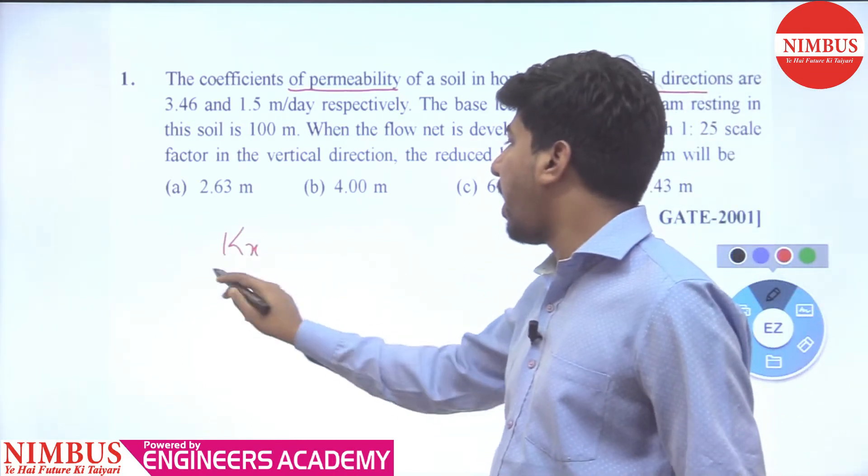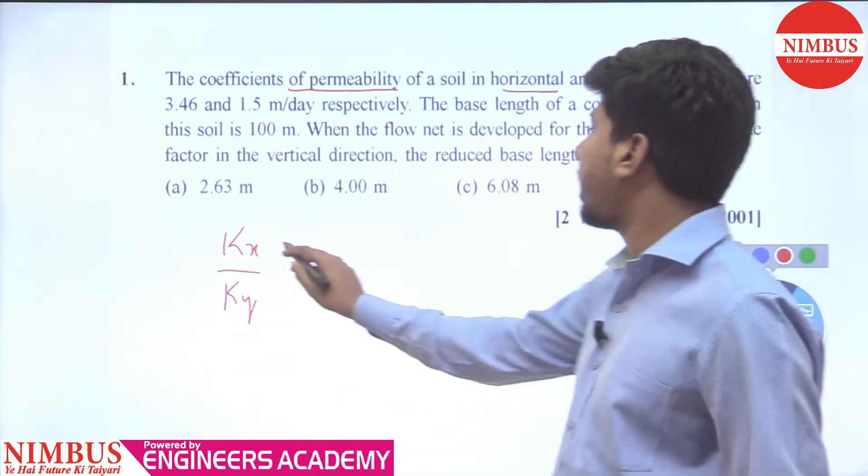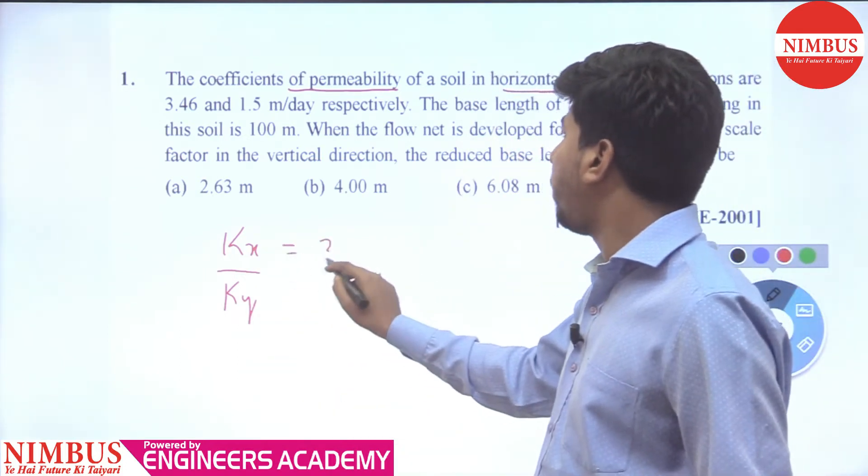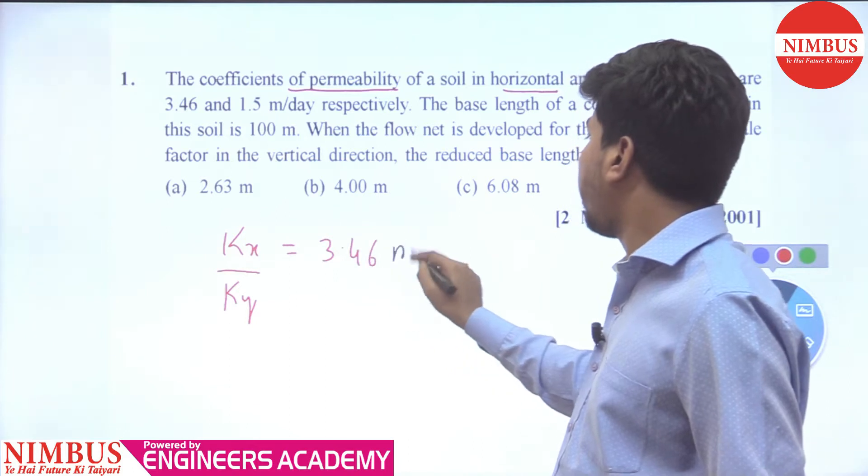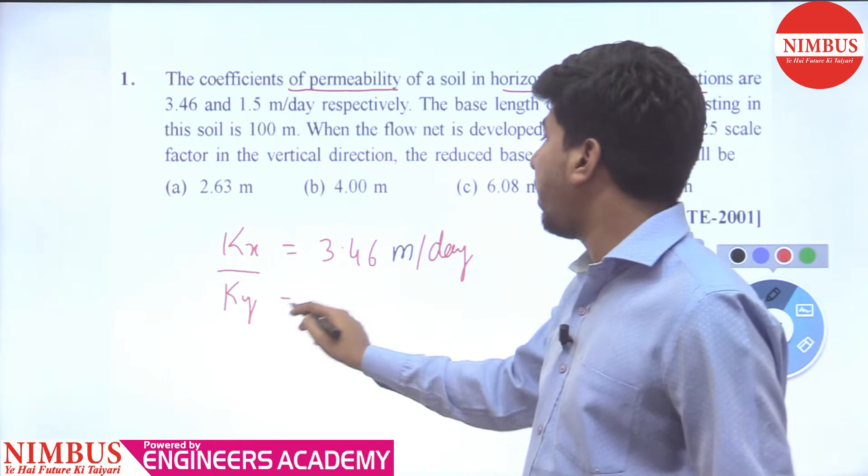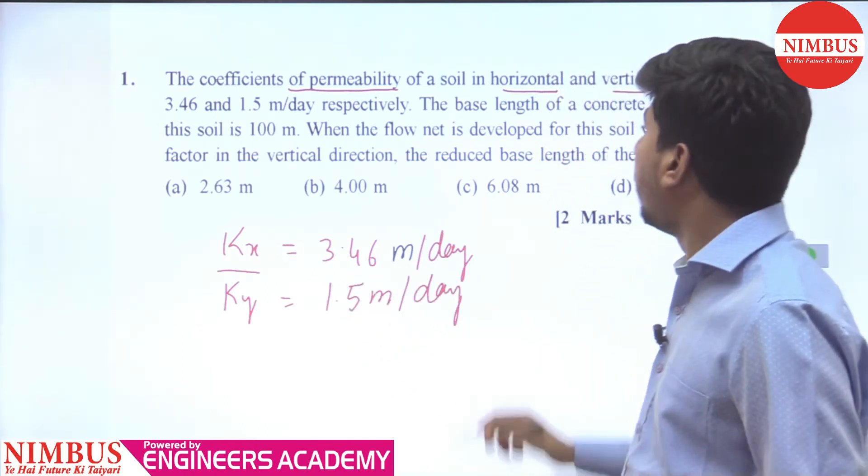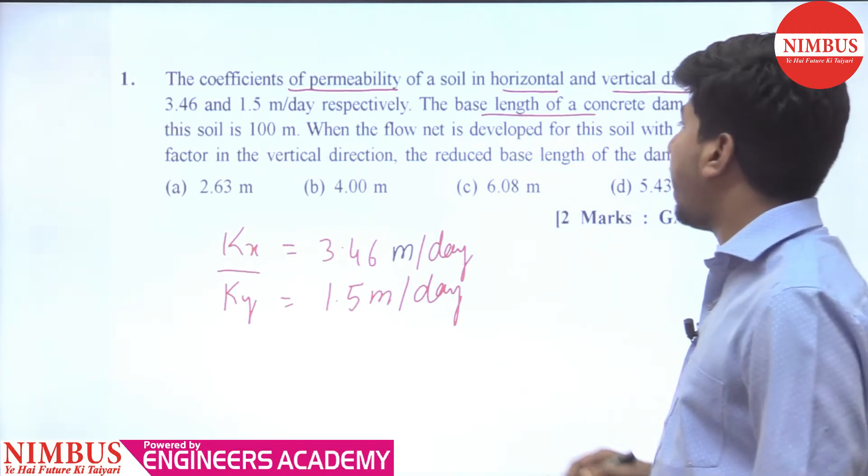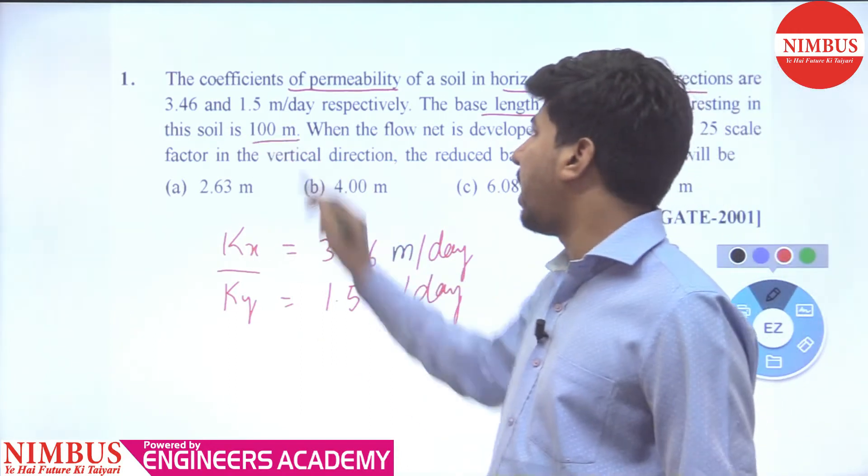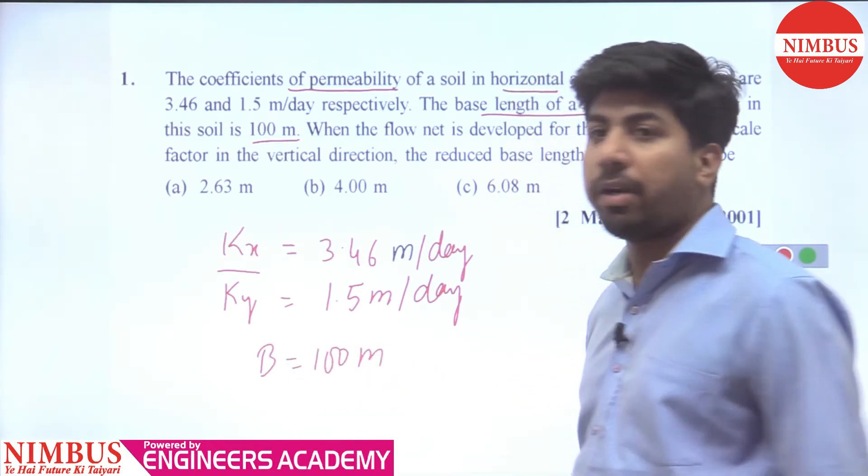Horizontal and vertical direction: kx value given is 3.46 meter per day and in vertical direction it is given as 1.5 meter per day. The base length of concrete dam resting on a soil is 100 meter. The dam rests on this.